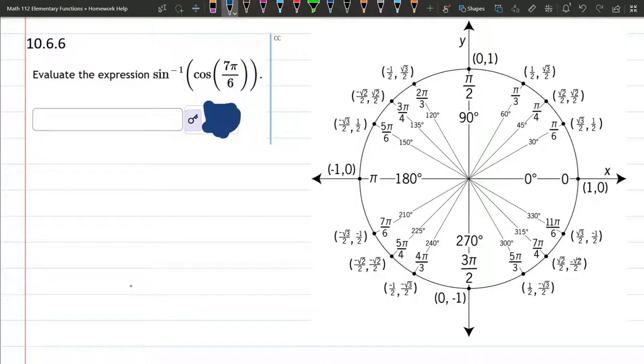We need to evaluate sine inverse of cosine of 7π over 6. Let's first find out where 7π over 6 is. It's right here. It's a little bigger than π.